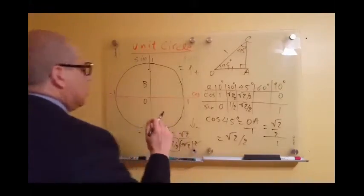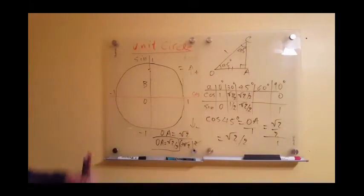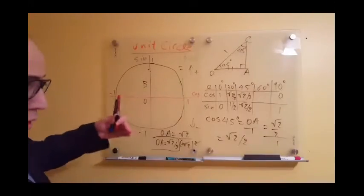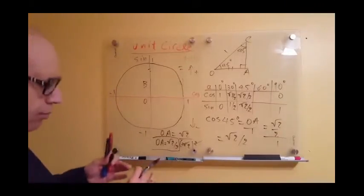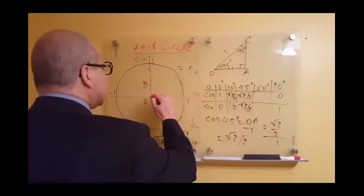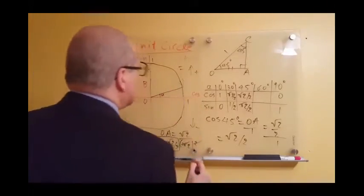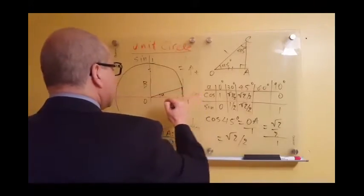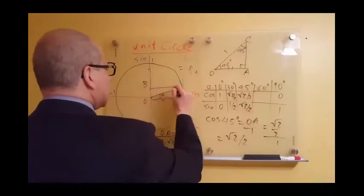I want to show you something which has to do with the use of the unit circle in order to find the cos and sin of angles with respect to some other angles. Let's say we have this angle here — let's call it A. The cos of this angle is this segment here, and the sin of this angle is this segment here.